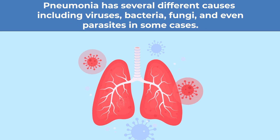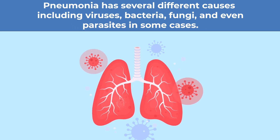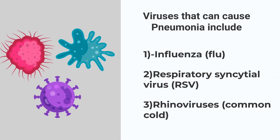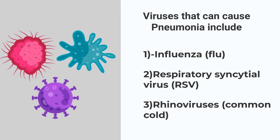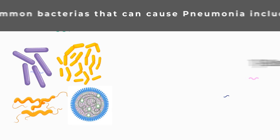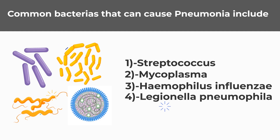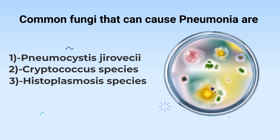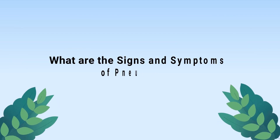Pneumonia has several different causes including viruses, bacteria, fungi, and even parasites in some cases. Common viruses that can cause pneumonia include the flu, RSV, and the common cold. Common bacteria include Streptococcus, Mycoplasma, Hemophilus, and Legionella. Common fungi include Pneumocystis, Cryptococcus, and Histoplasmosis.